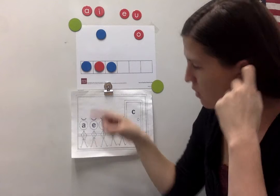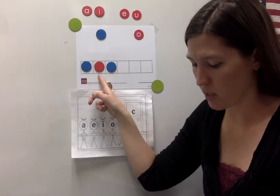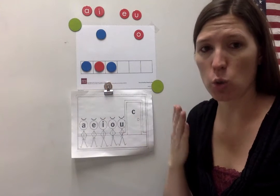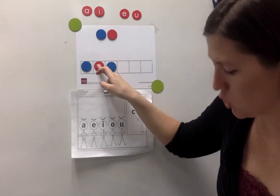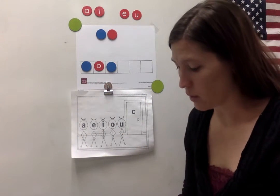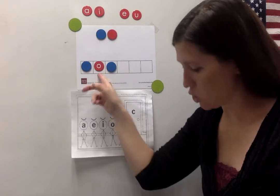The chips that we have are blue, red, blue. The sound chip represents AH which is the short vowel sound for O. Next I'll trade the red sound chip for the spelling chip. When there's a letter on the chip, it's called a spelling chip. I'll trade the red sound chip for the red spelling chip.